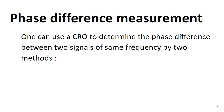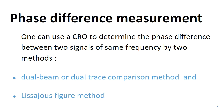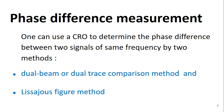Now let us see how we can use the CRO to determine phase difference between two signals of the same frequency. We can use two methods. The first one is the dual beam or dual trace comparison method, and the second method is the Lissajous figure method.